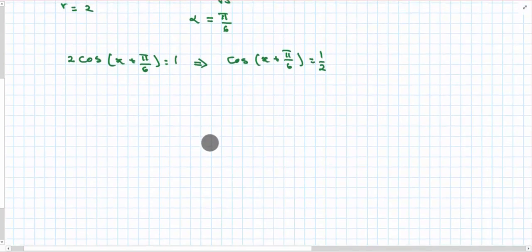Alright, so looking at my quadrants, I have positive cos is positive in the first and fourth, and I'm looking for a half. I know that would be π/3 in the first quadrant.